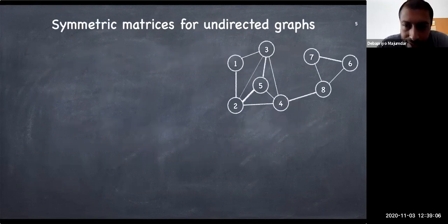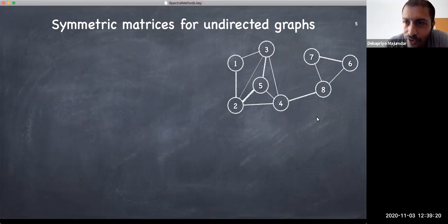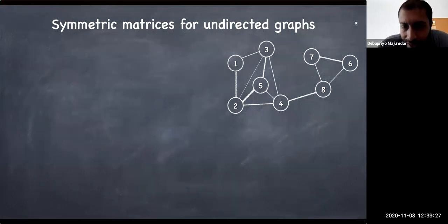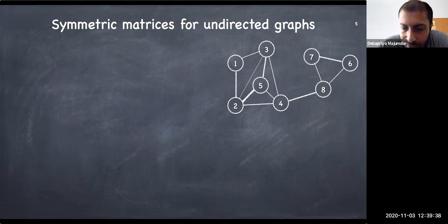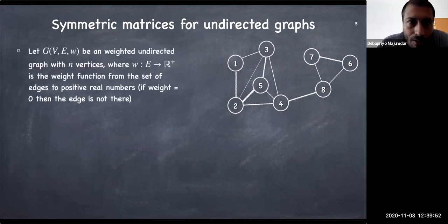Now we'll start looking at graphs. Suppose we have a small social network graph where there are communities. You can clearly see one community — nodes 1 to 5 — and another community — nodes 6, 7, 8. For convenience, I've named the vertices 1 to 5 on the left and 6 to 8 on the right. In real data you can always reorder the vertices and your matrices will also be reordered.